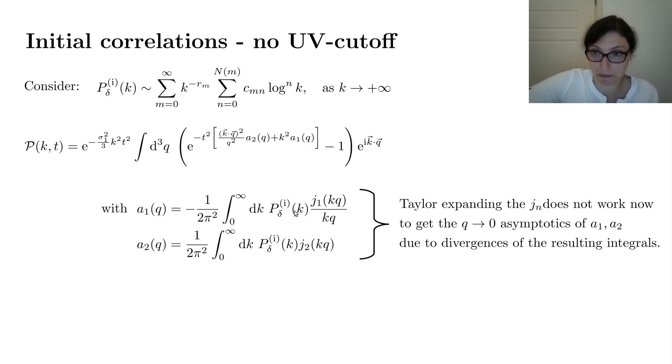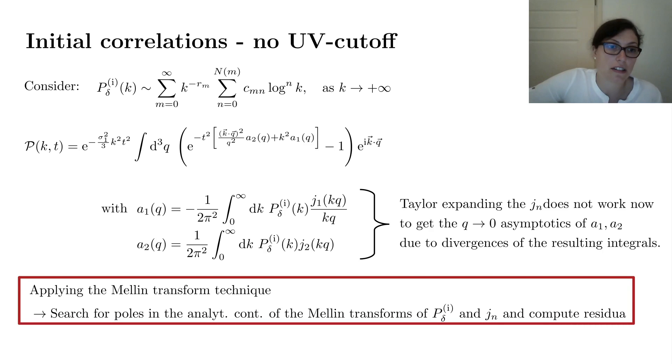There is a technique that's called a Mellin transform technique, where you rewrite these integrals in terms of Mellin transforms. You then have to search for poles in the analytical continuation of the Mellin transforms of the initial power spectrum and the spherical Bessel functions, compute the residua, and by that you get asymptotic expansions of a₁(q) and a₂(q). And you got rid of the divergences.